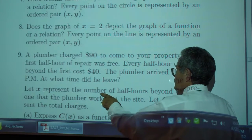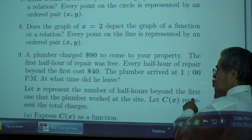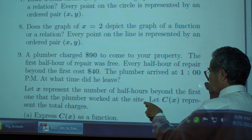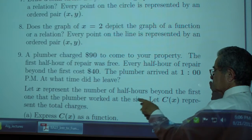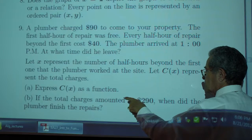Okay. The first hour of repair costs $40. Half hours beyond the first one that the plumber worked at the site, where C of X represent the total charges. Express C of X as a function.